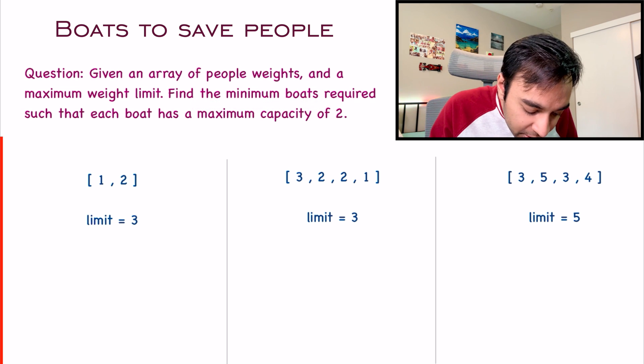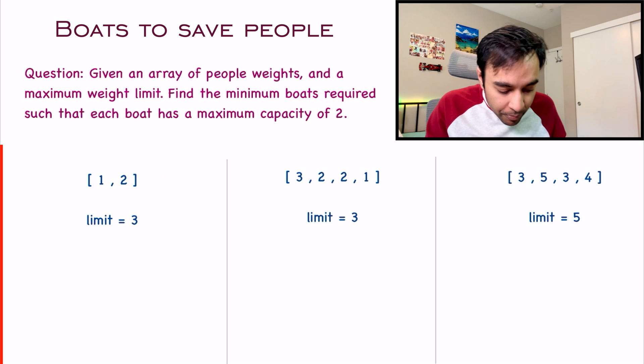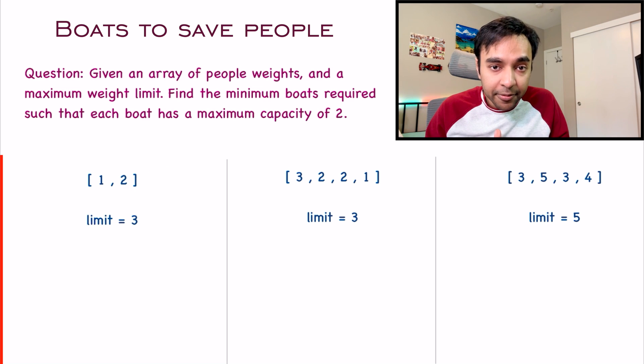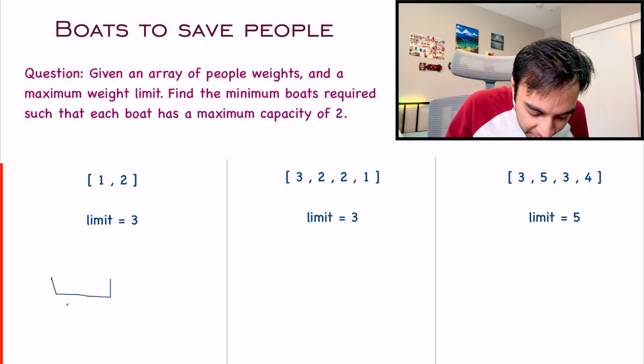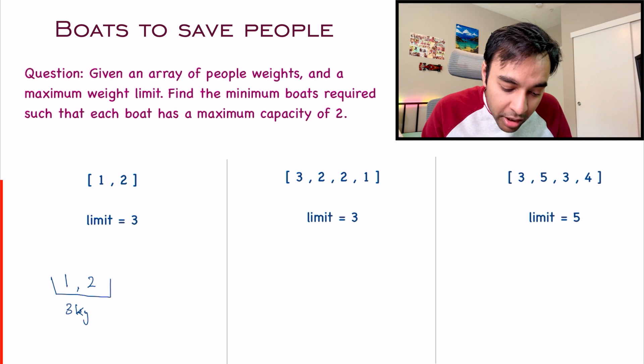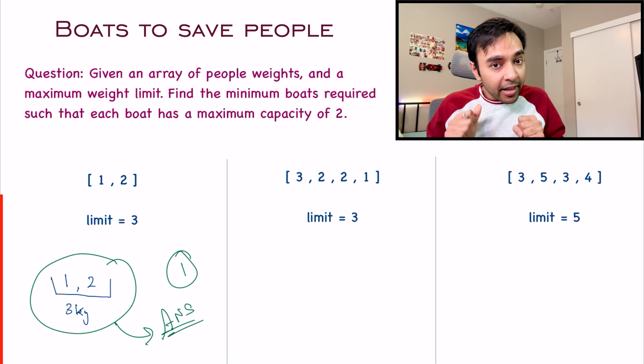For the first test case, look at this example. There are 2 people, one of them has a weight of 1 kg and the other one has a weight of 2 kg. When you start to take boats, I have one boat with 3 kg capacity and I can put both my people in this boat. They are both happy, the boat does not sink, and you needed one boat. So 1 is your answer.